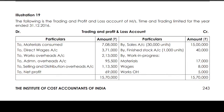The following is a trading and profit and loss account of Missed Time and Trading Limited for the year ended 31st December 2016. Material Consumed: 7,08,000; Direct Wages: 3,71,000; Works Overhead: 2,13,000; Admin Overhead: 95,500; Selling and Distribution Overhead: 1,13,500; Net Profit: 69,000. Sales: 30,000 units, 15,00,000. Finished Stock: 1,000 units, 40,000. Work in Progress — Material: 17,000; Wages: 8,000; Works Overhead: 5,000.